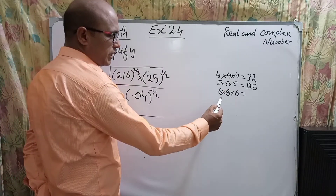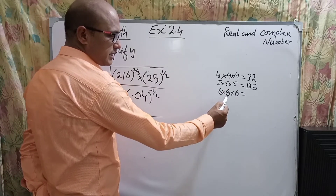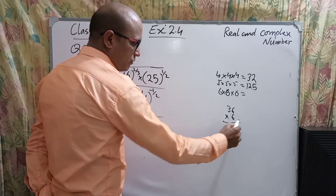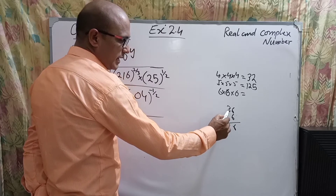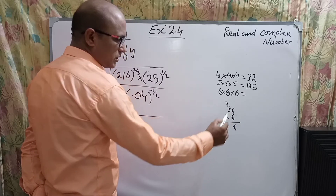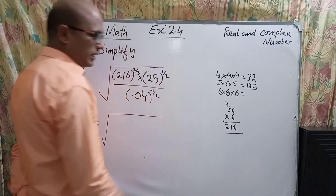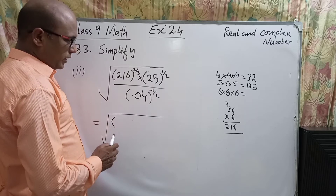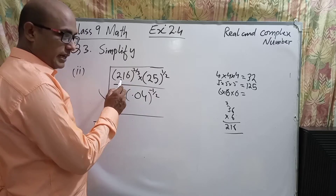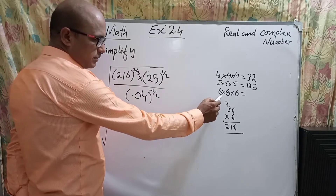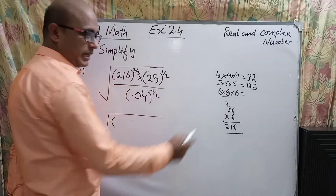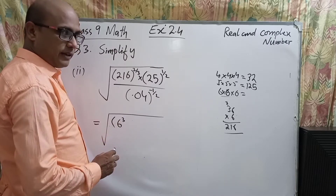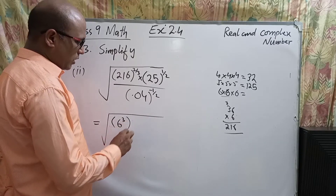Six multiplied three times: 6×6 = 36, and 36×6 = 216. So exactly we get the number 216. We can write 216 as 6 power 3, and the whole exponent 2/3 will be written the same way outside.